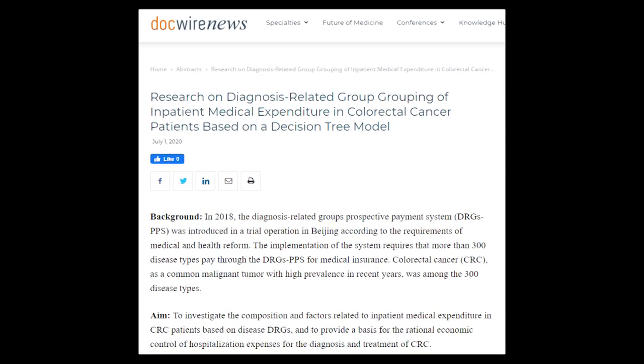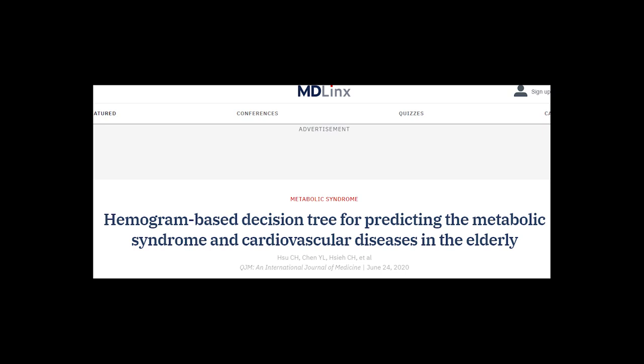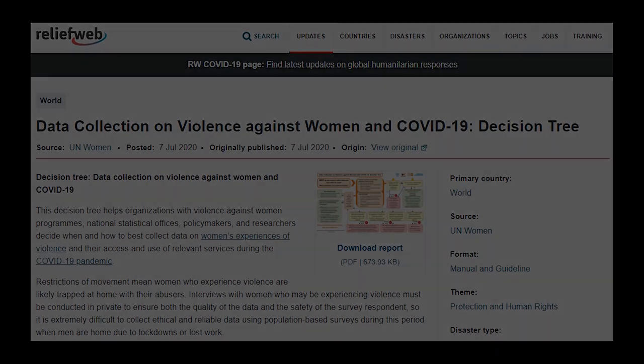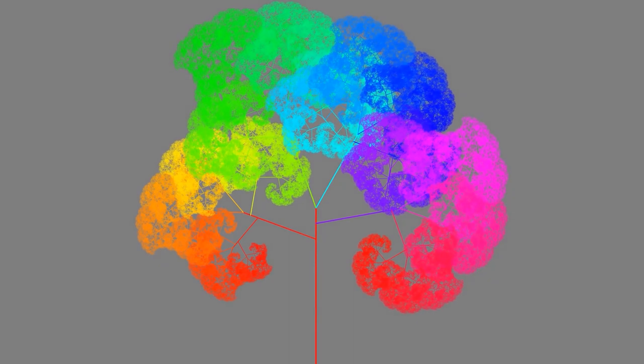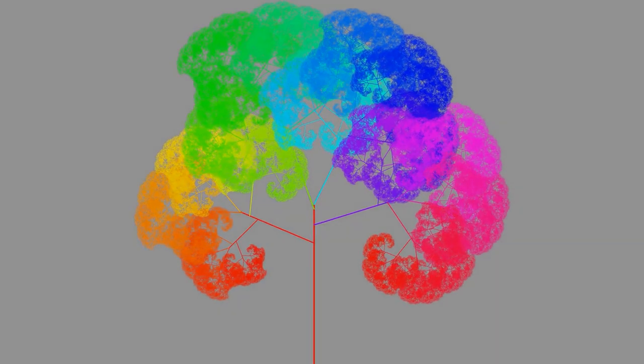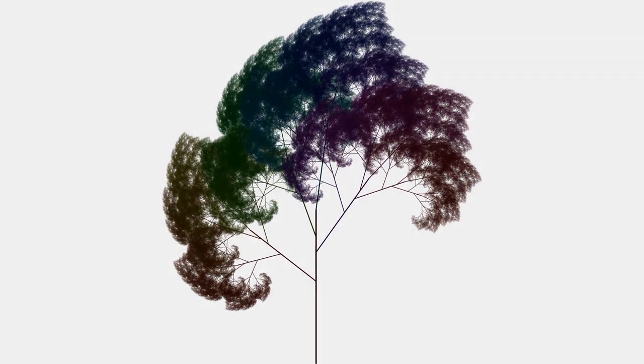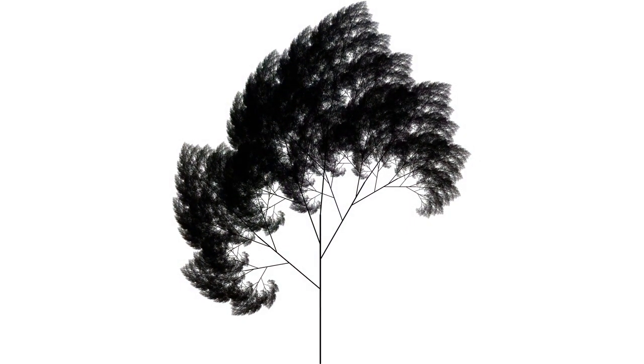Decision trees are by far some of the most common models deployed in the world. Their simple and efficient nature, as well as their ability to be combined into very powerful models such as random forests and gradient-boosted trees, make them by far many developers' favorite. Stay tuned to learn more about these in future videos.